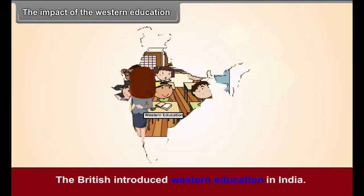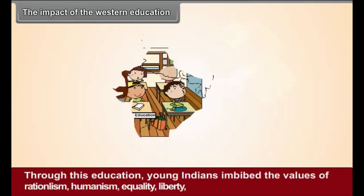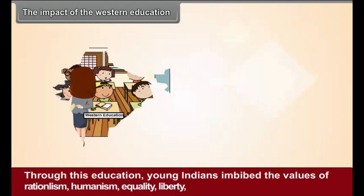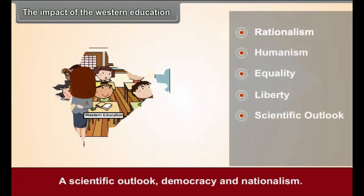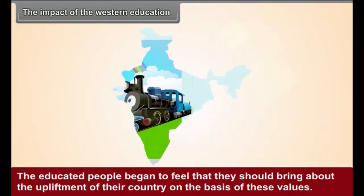The Impact of Western Education: The British introduced Western education in India. Through this education, young Indians imbibed the values of rationalism, humanism, equality, liberty, a scientific outlook, democracy and nationalism. The educated people began to feel that they should bring about the upliftment of their country on the basis of these values. Thus, Western education lent a modern outlook to the national sentiment of the Indians.